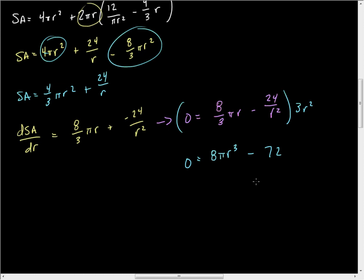So we get 72 divided by 8, which is 9/π, equal to r³, which implies that r equals the cube root of 9/π.